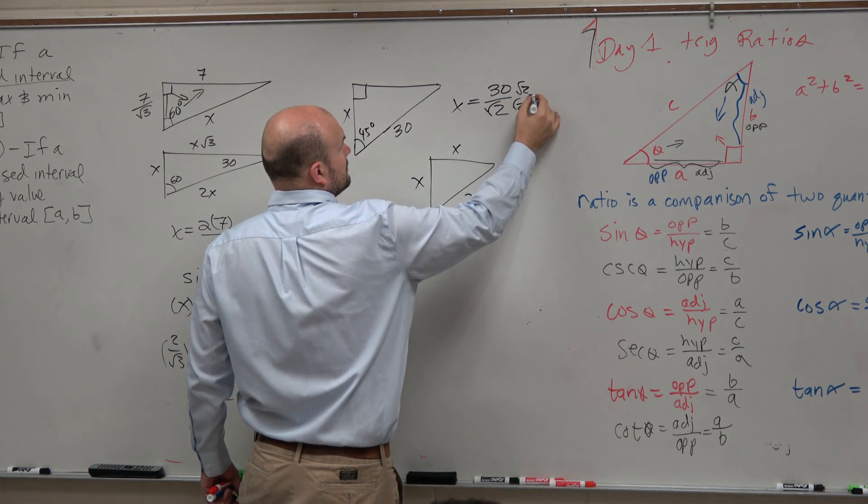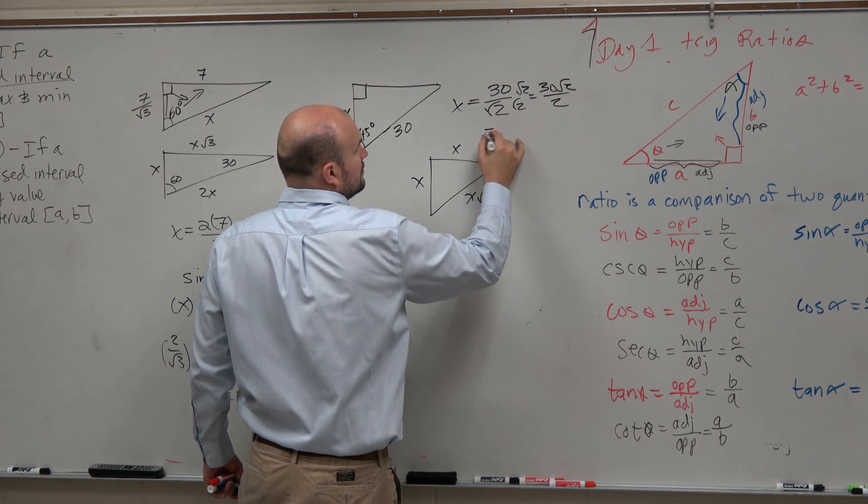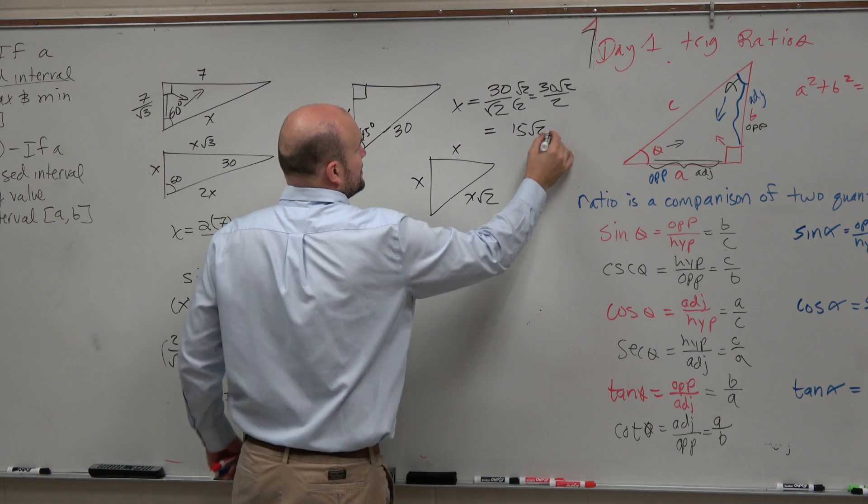Rationalize the denominator. 30 square root of 2 over 2, which equals 15 square root of 2.